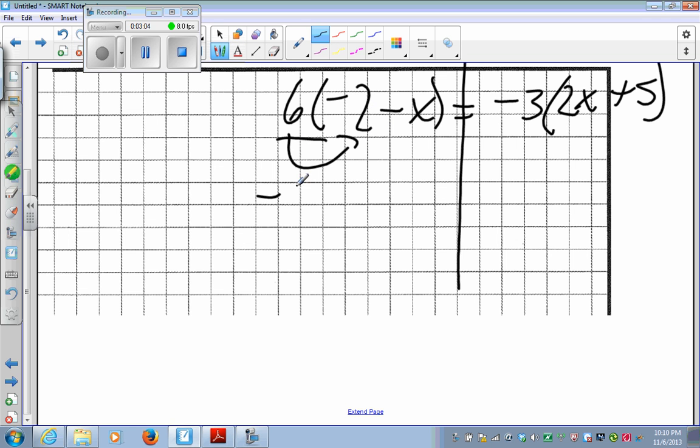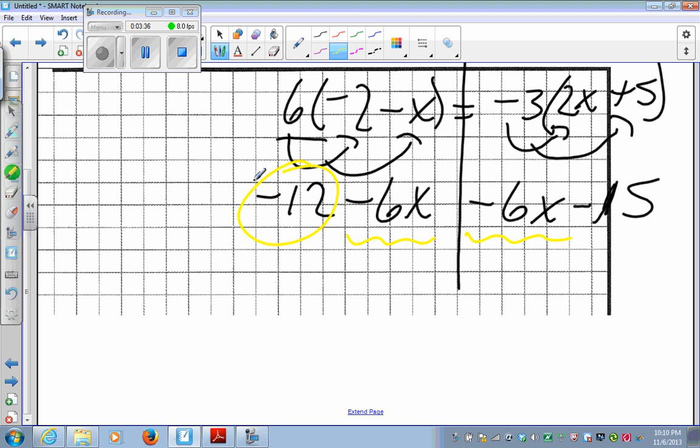So 6 times a negative 2 is a negative 12. 6 times a negative x is a minus 6x. I can't put the 12 and the 6x together, so now I'm going to go over here. Negative 3 times 2x is a negative 6x. Negative 3 times a positive 5 is a negative 15. Now, I might notice something kind of fishy already just by looking at it. Notice how I've got a negative 6x and a negative 6x.